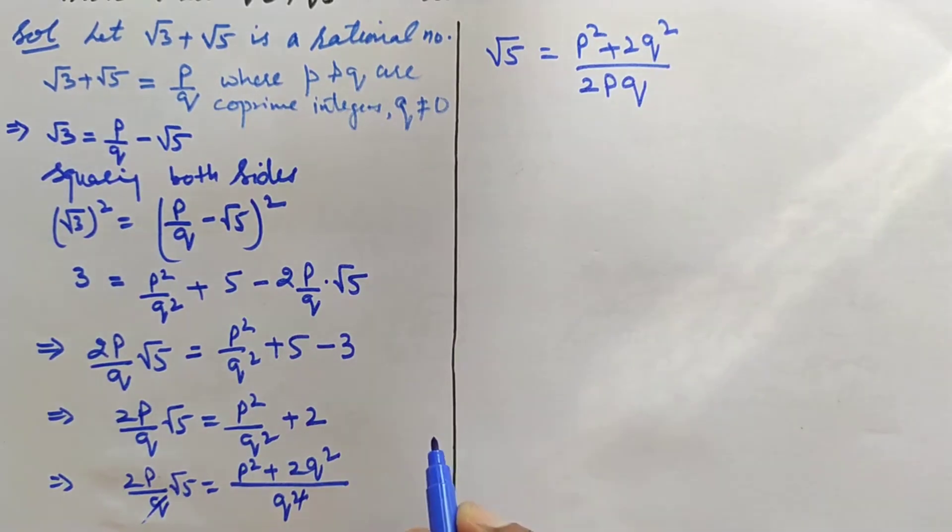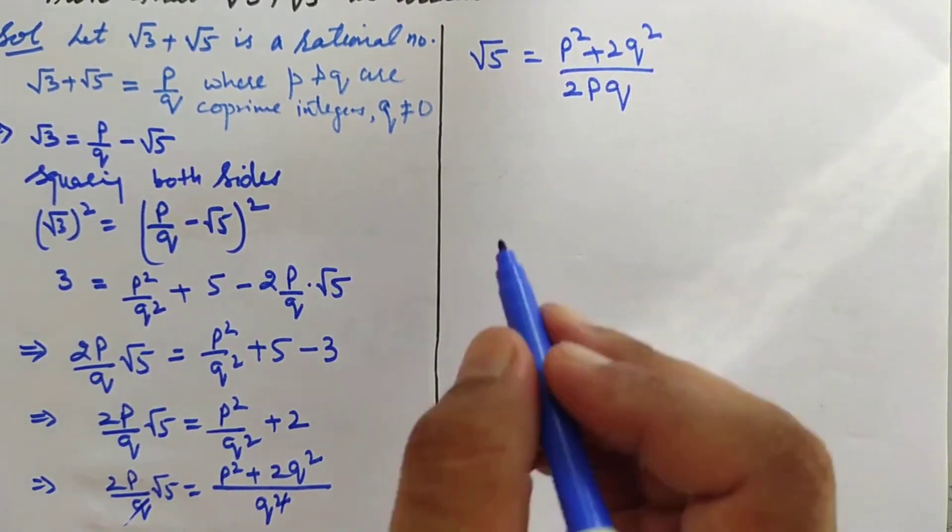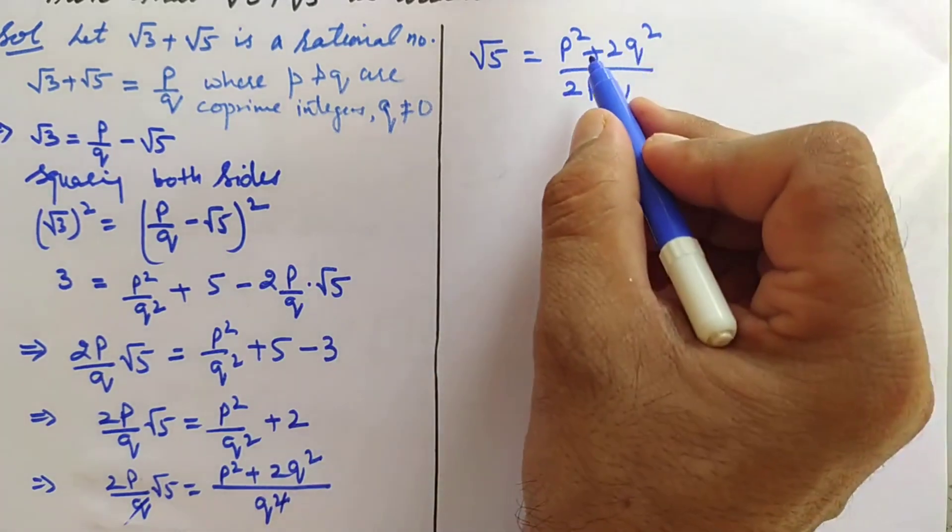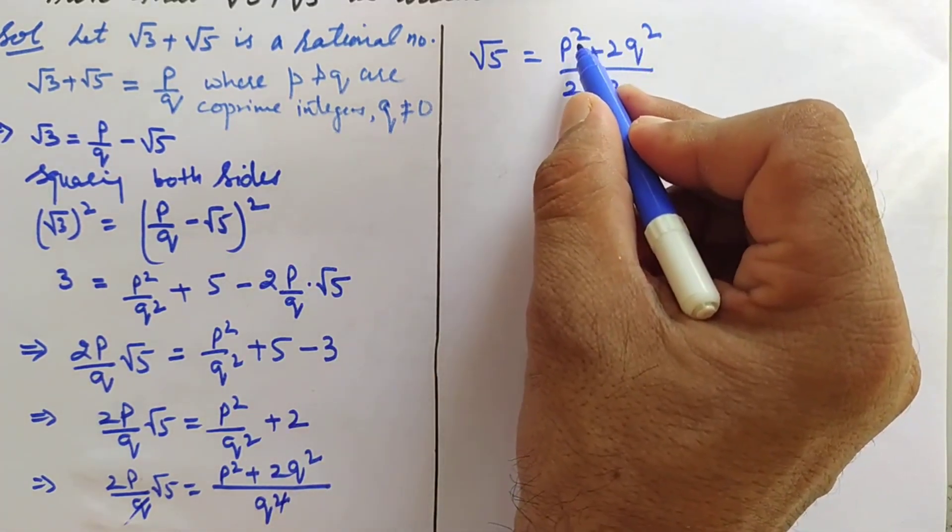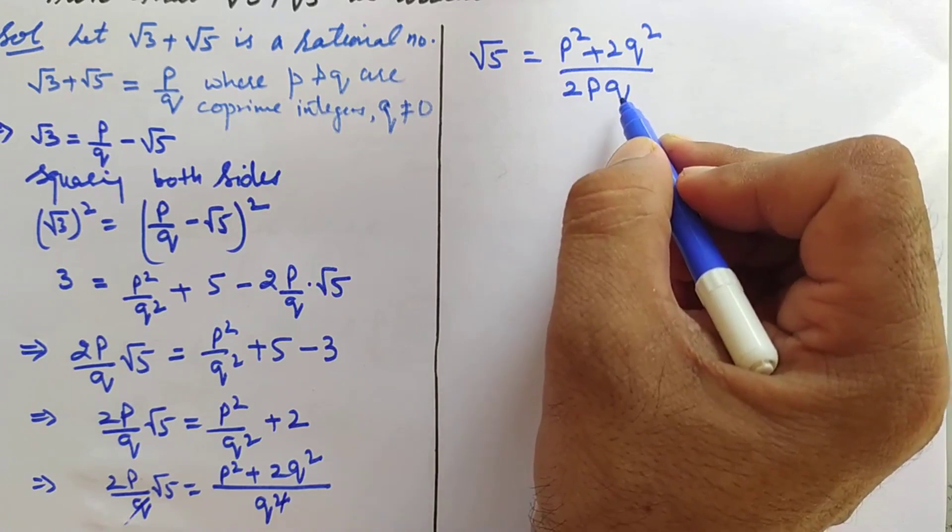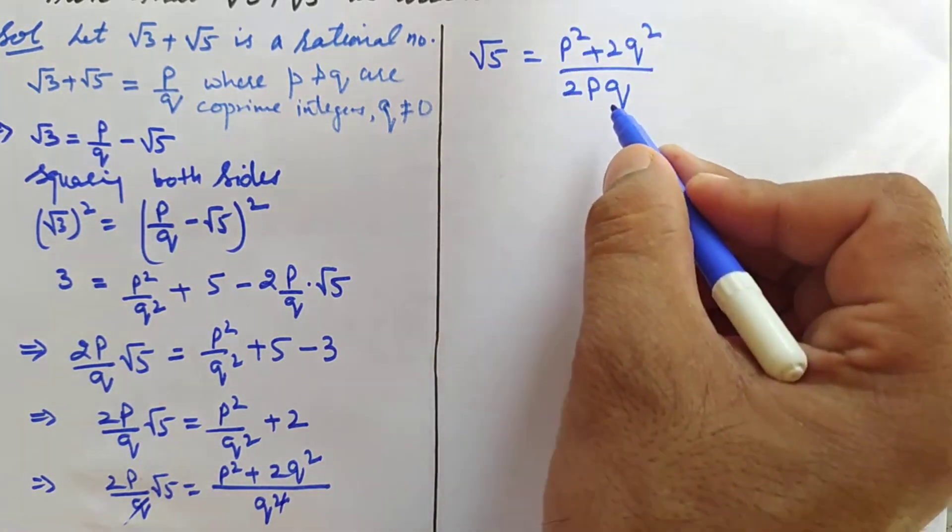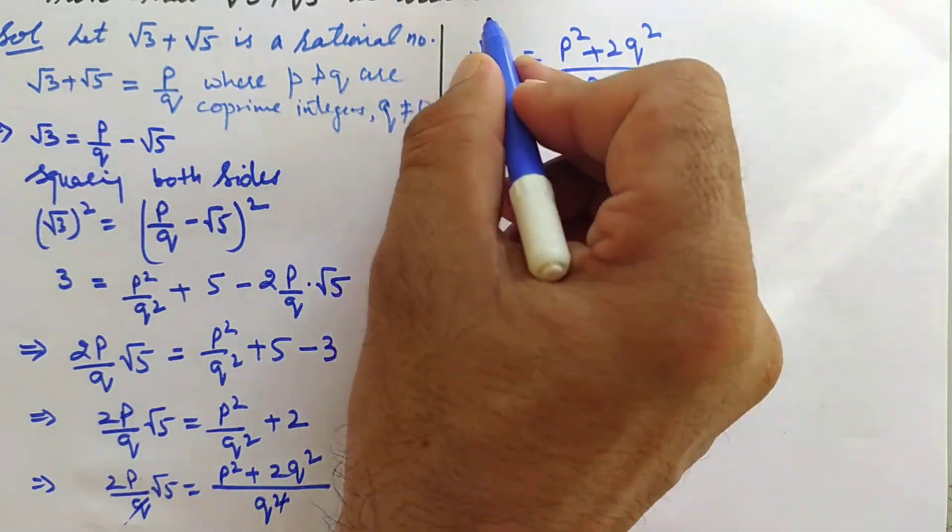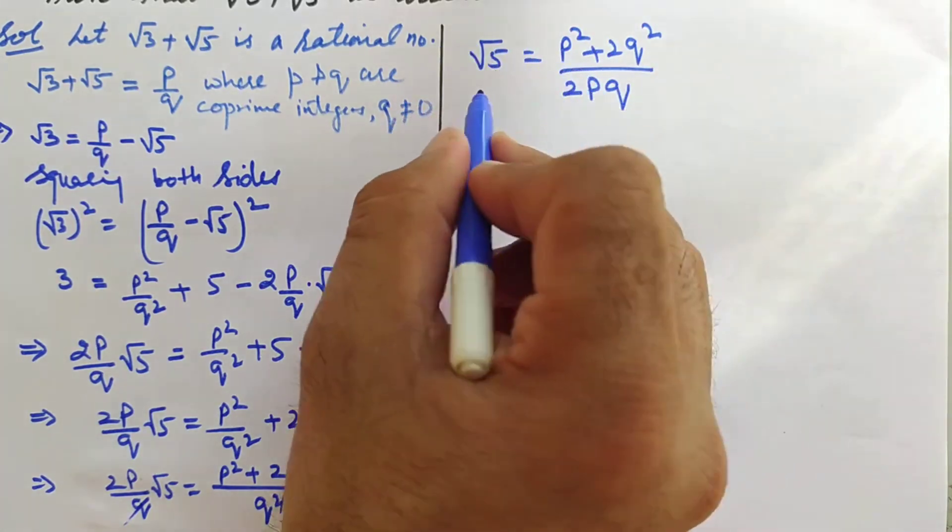Now if you see, √5 is an irrational number that we have proved earlier. But here p is integer, 2 is integer, q is integer—all these are integers. So combination of these all integers is rational, but this is irrational. So rational and irrational are equal here, which is coming.